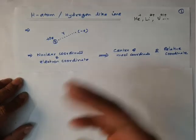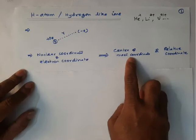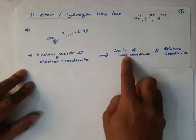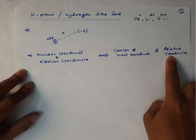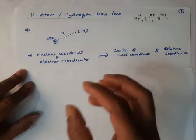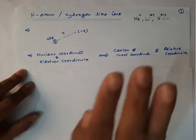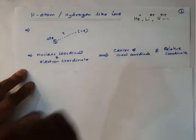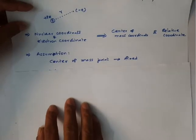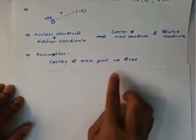How to make this coordinate change we have already discussed, so I am not going to repeat that. The motion associated with the center-of-mass coordinate is called translational motion, and the motion associated with the relative coordinate is called relative motion. For translational motion we take the entire mass of the atom — mass of the nucleus plus mass of the electron. For relative motion we take only the reduced mass, which corresponds to one particle. Now I am going to make an assumption: I am going to fix the center-of-mass point.